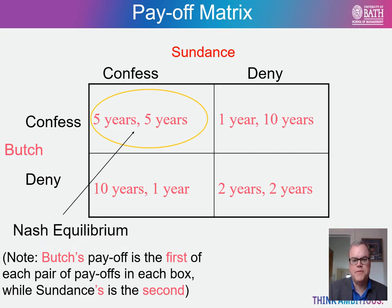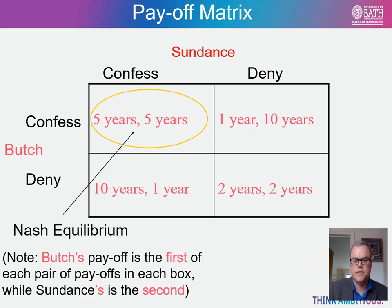We can represent these payoffs in a payoff matrix. We have Butch and Sundance, and each can either choose to confess or deny. Butch's payoffs are given first in each box and Sundance's are the second number. We can see that each prisoner has a dominant strategy to confess. A dominant strategy is the best one to play irrespective of whatever the other prisoner decides to do. Consider Butch: if he decides to deny, the worst possible outcome is a penalty of ten years in prison, which arises if Sundance chooses to confess.